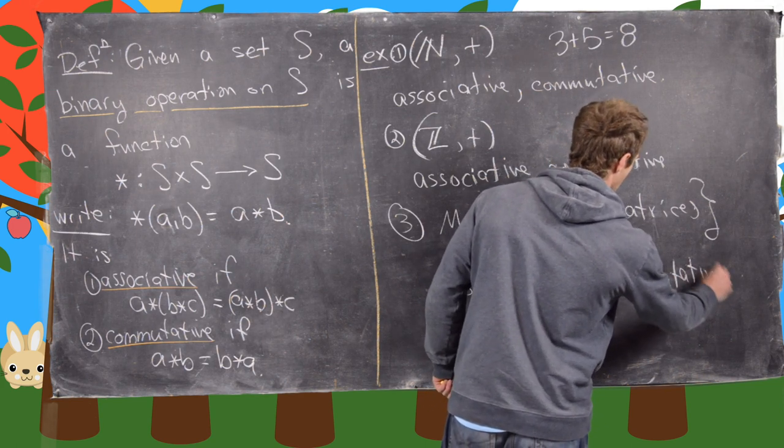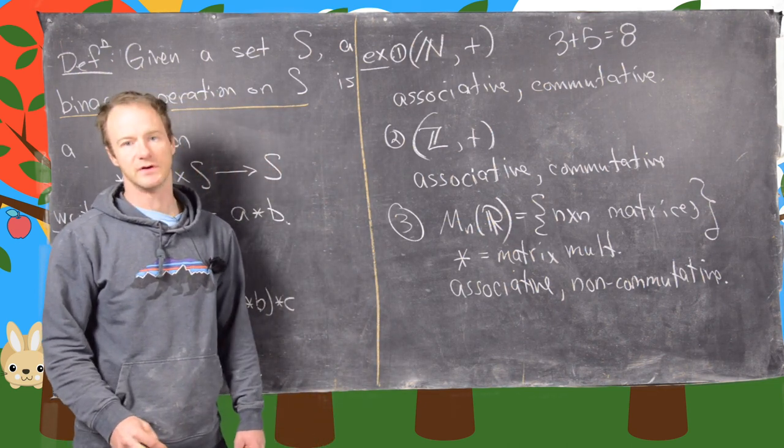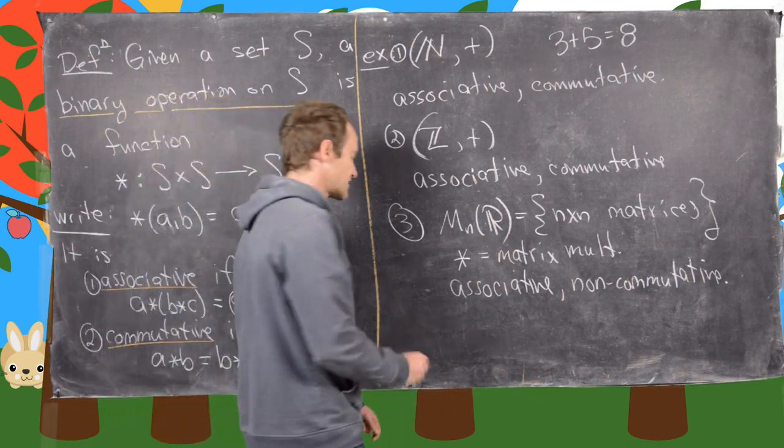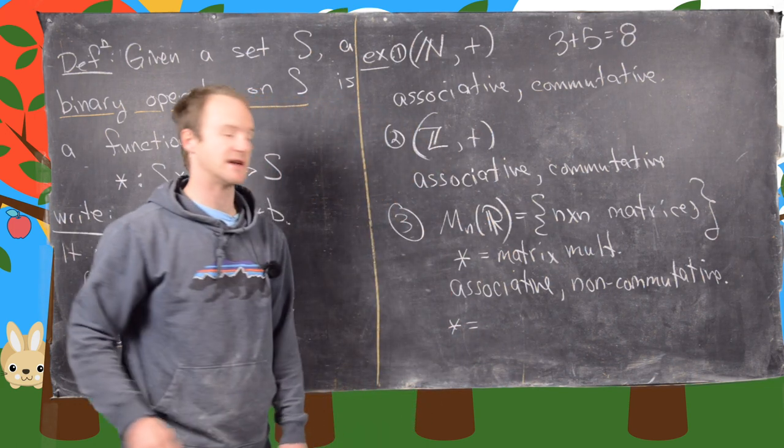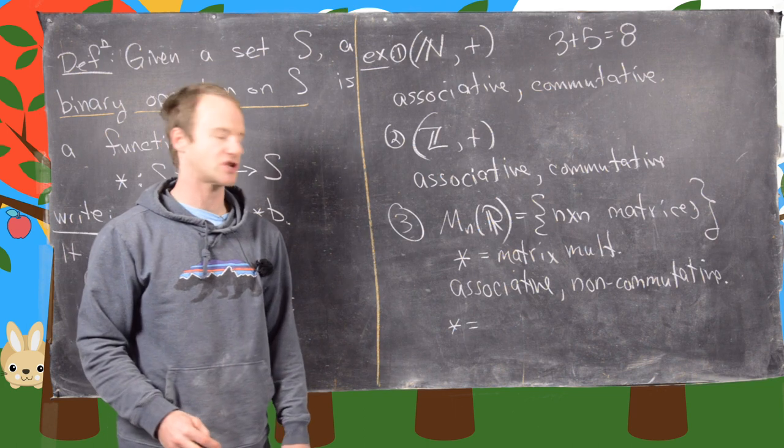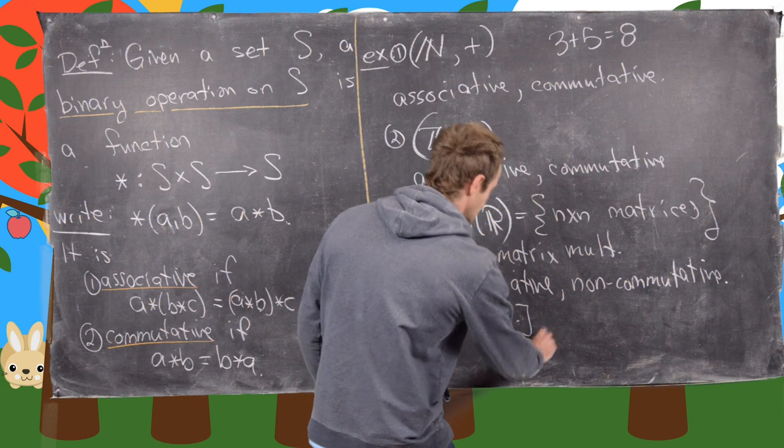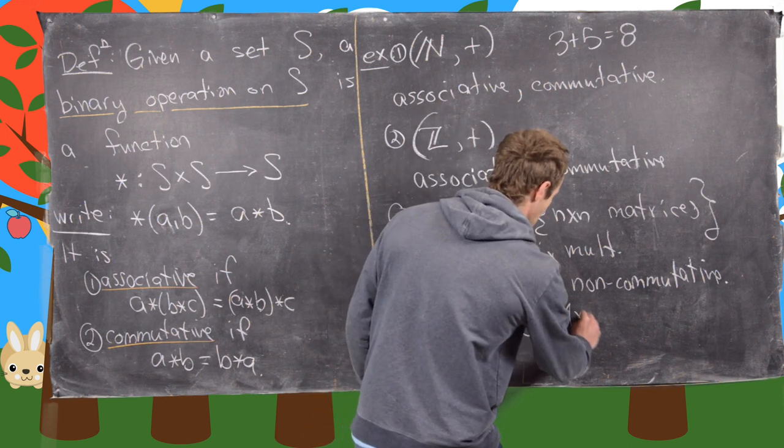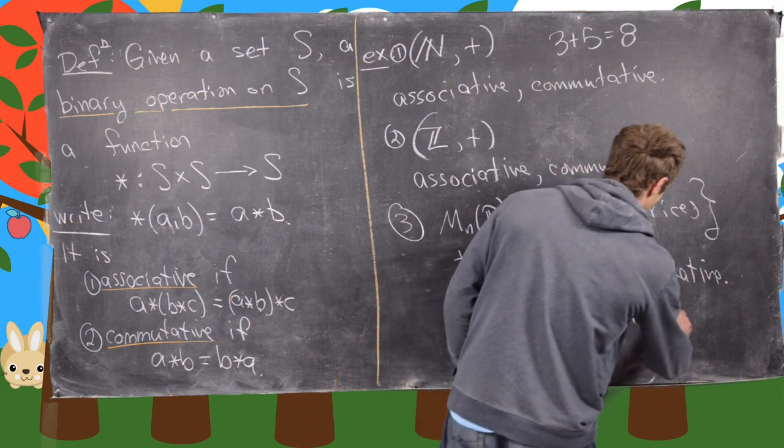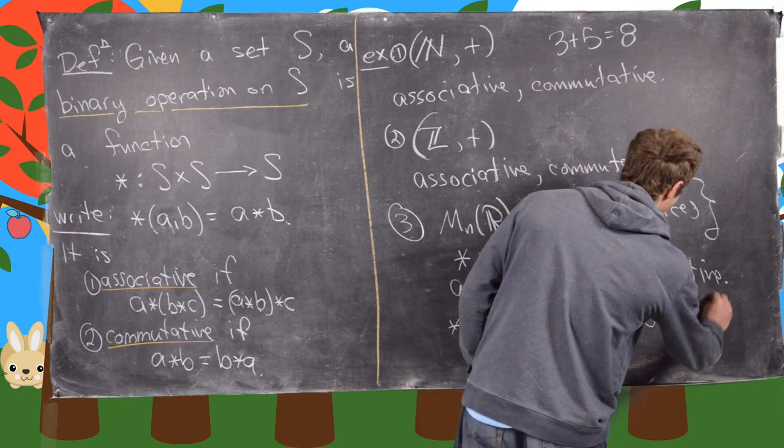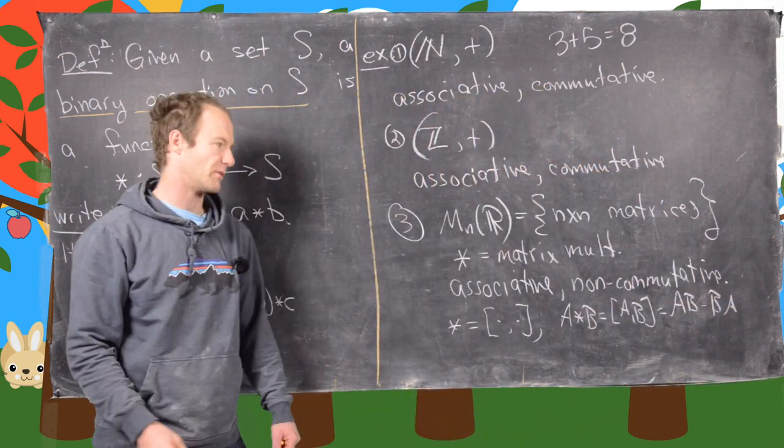So this is an example of an operation that is associative but not commutative. But now let's look at another example here. Let's say star is redefined instead of being matrix multiplication. Let's say it is the commutator. And so what I mean by that, A star B in this case is the commutator of A and B. In other words, it's AB minus BA where the AB and the BA are just normal matrix multiplication.